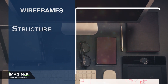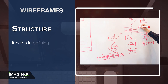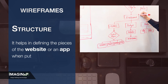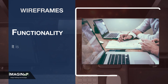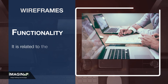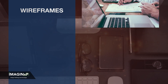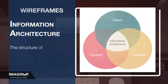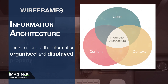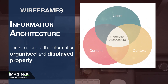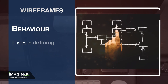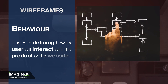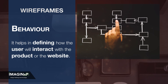Wireframes include several components. Structure — it helps in defining the pieces of a website or an app when put together. Functionality — it relates to the interaction on a website. Information architecture — the structure of information organized and displayed properly. Behavior — it helps in defining how the user will interact with the product or the website.